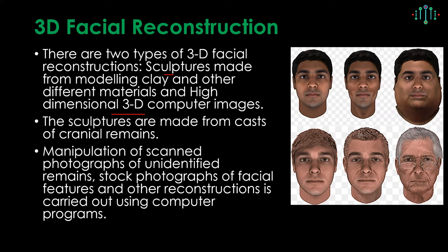Sculptures are made from casts and cranial remains. Manipulation of scanned photographs of unidentified remains, facial features, and other reconstructions is carried out using computer programs. Once the basic appearance with hard tissues and soft tissues is achieved, a photograph can be taken and computerized techniques applied — changing hairstyle, beard, and other features as in 2D reconstruction. The computer can also simulate whether the face is younger, adult, obese, adolescent, or old, and whether there is a beard.